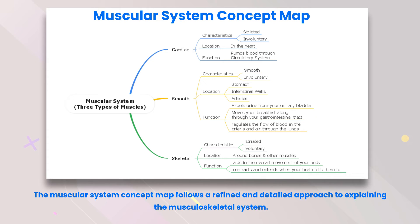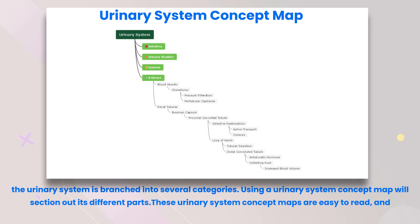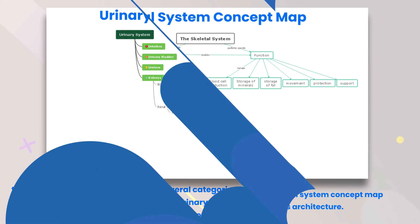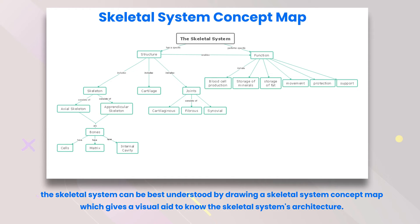Urinary system concept map: the urinary system is branched into several categories. Using a urinary system concept map will section out its different parts, making them easy to read and understand. Skeletal system concept map: the skeletal system can be best understood by drawing a skeletal system concept map, which gives a visual aid to know the skeletal system's architecture.